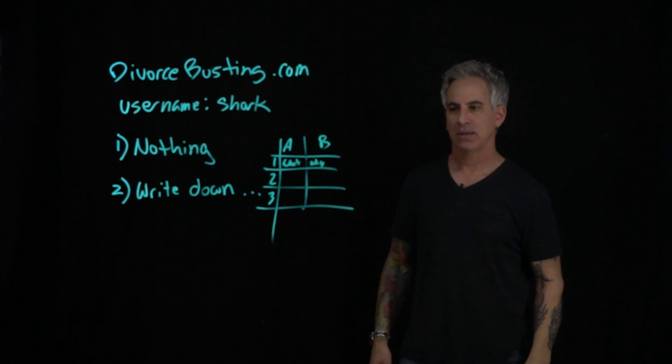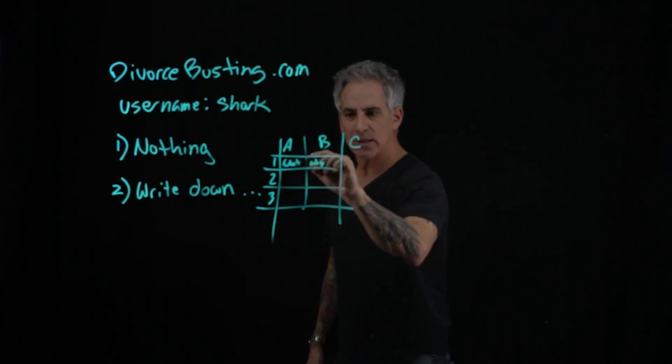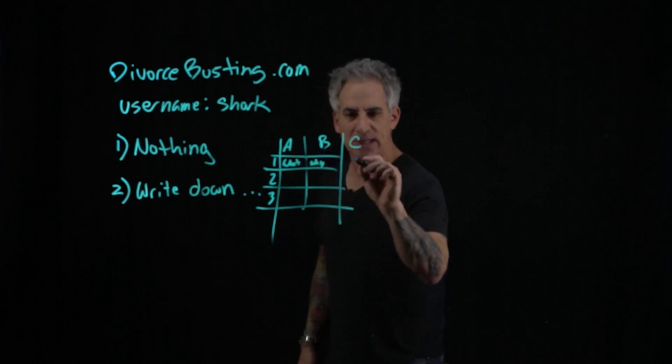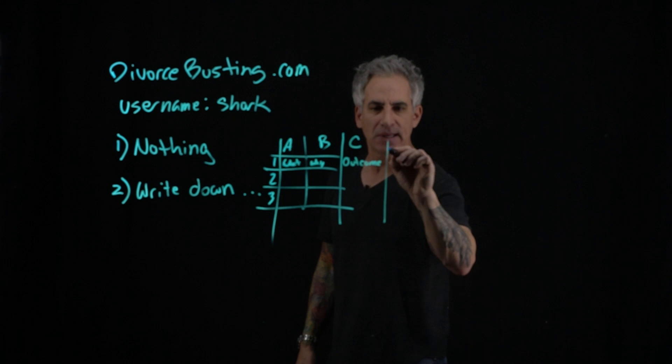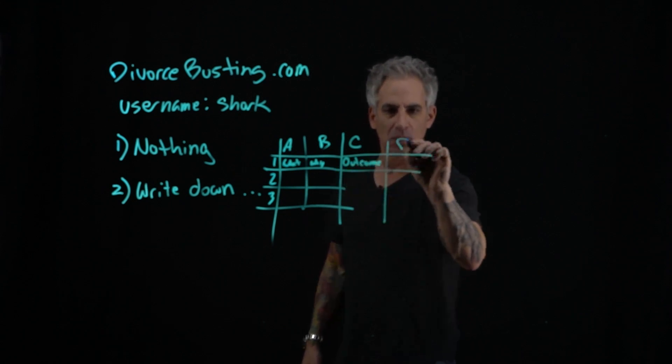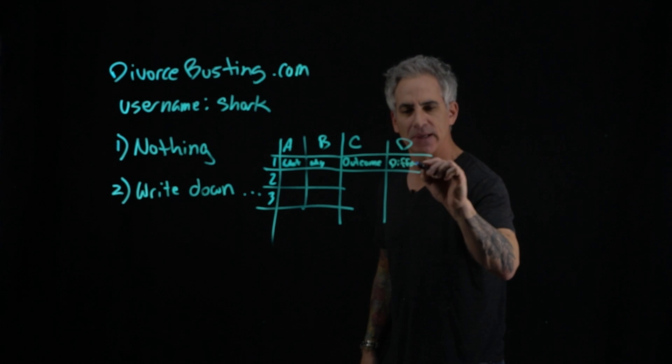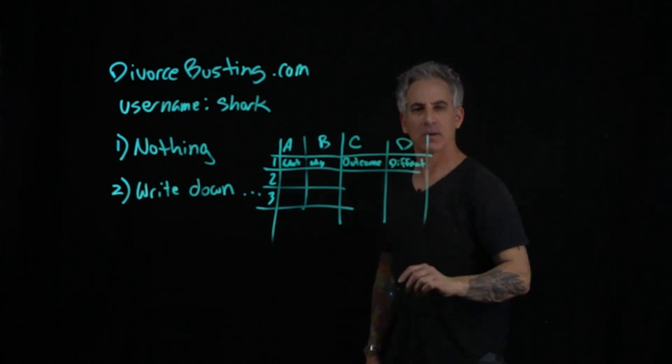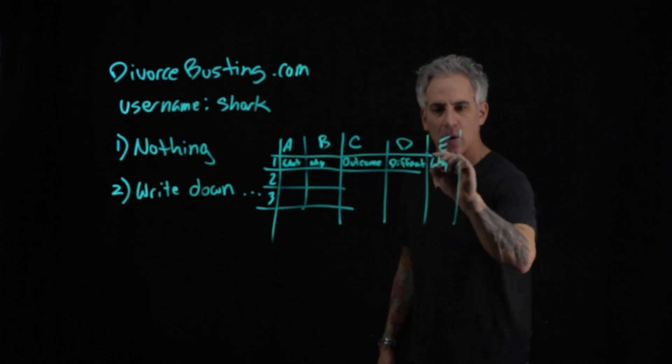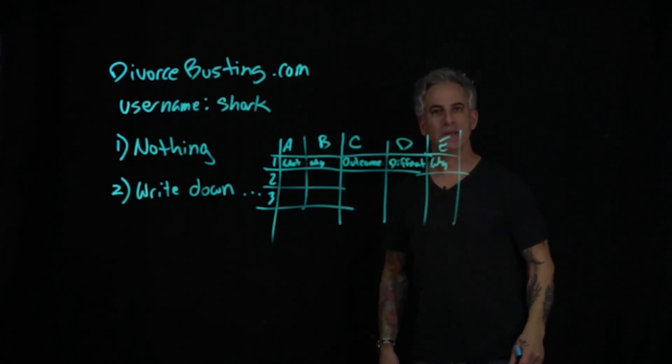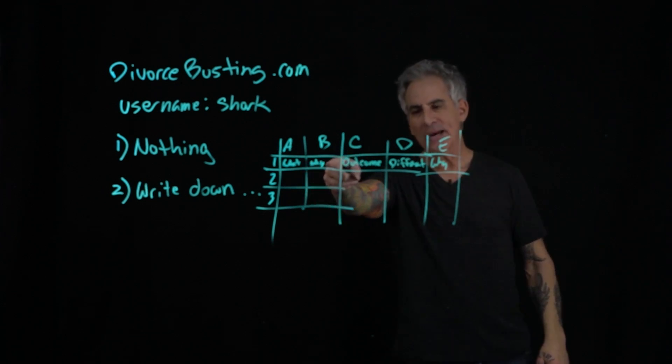Then in column B, write down why. So this is what you did, why you did it. Then I want you in C1, what you did, why you did it, and the outcome. And then, you guessed it, what's D? What you wish you could have done differently.